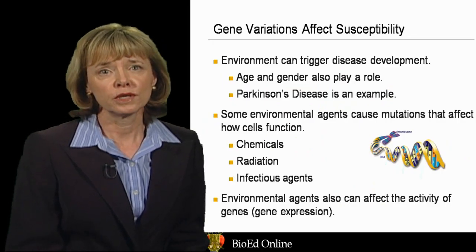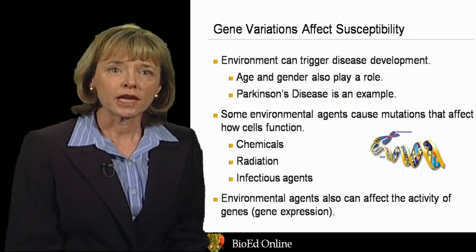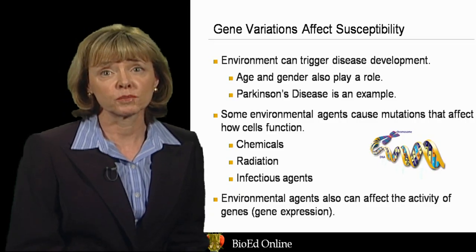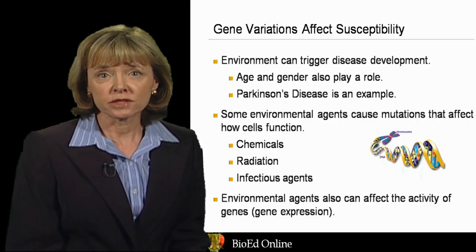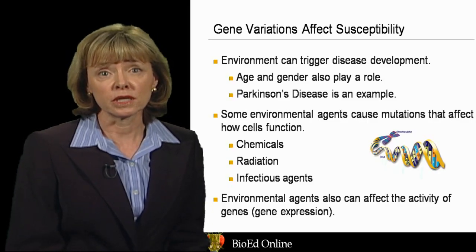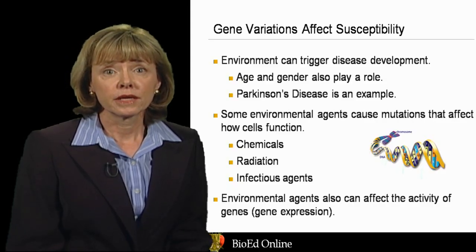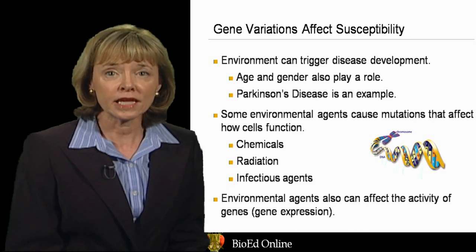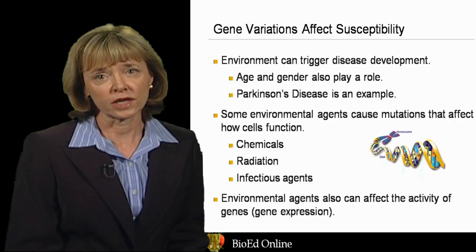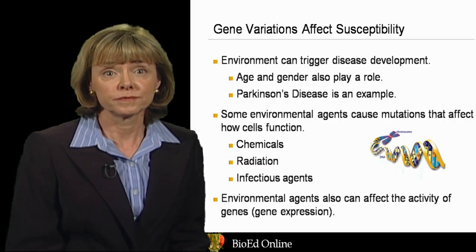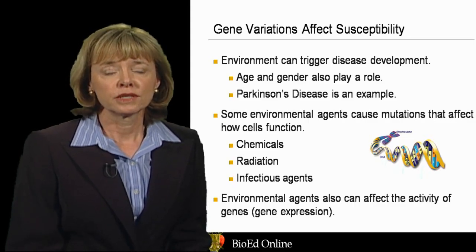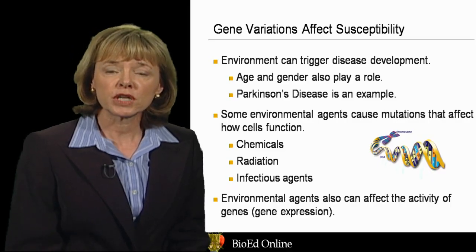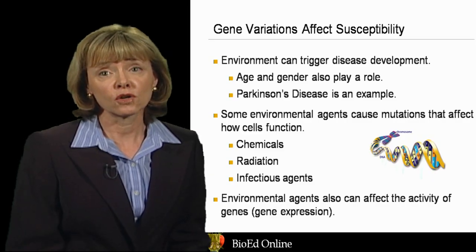Genetics has a key role in environmental health. We all have two copies of every gene — one set comes from one parent and the other set comes from our other parent. Changes in one or both copies of a particular gene can confer greater or less susceptibility to a toxin in the environment. The environment can actually provide a trigger for some diseases to develop, and it's usually a combination of genes that determines whether someone will have a negative health effect from an environmental exposure. Age and gender also play a role. Some agents in the environment actually cause changes in our genes — mutations that affect how cells function. Some of these agents are chemicals, radiation, or even infectious agents that can cause certain kinds of cancers.